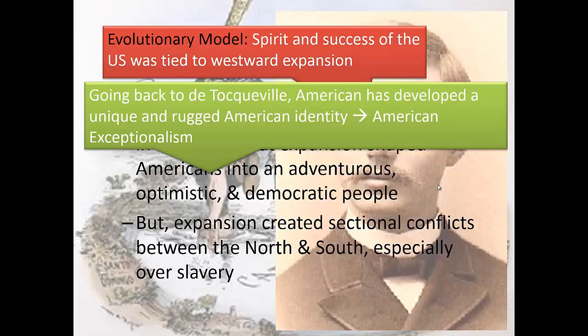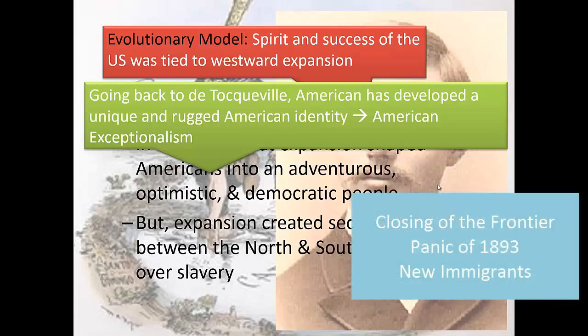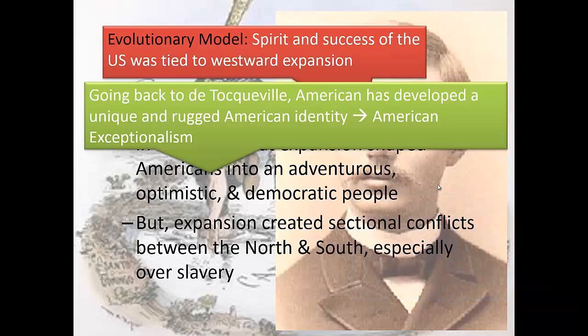In 1890, a lot of crises hit America: the Panic of 1893, mass immigration of new immigrants, and the closing of the American frontier. We start turning our attention outward, and that's going to be the imperialism — or new imperialism, as it's known in American history — that begins in the 1890s as well.